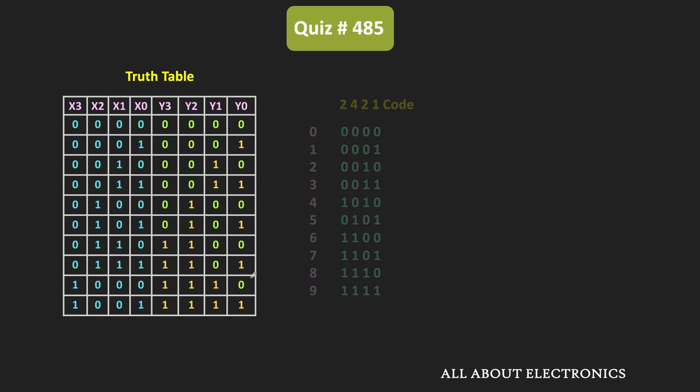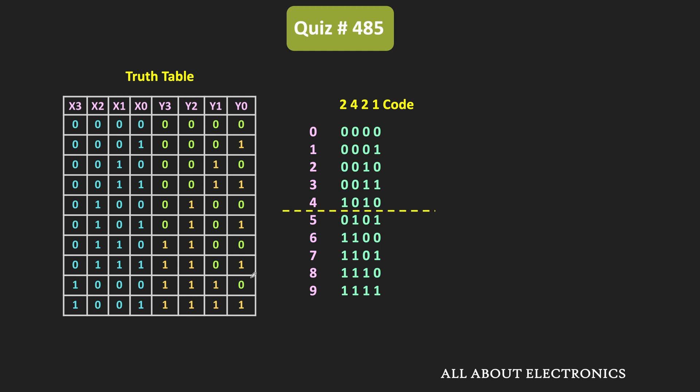The third option is the 2421 code. Similar to the 8421 code, this 2421 BCD code is also a weighted code. The MSB has the weight of 2, while the next digit has the weight of 4. These are the corresponding 2421 BCD codes for decimal digits 0 to 9. This 2421 BCD code is a self-complementing code, meaning we can find the complement of any number by simply changing 1s to 0s and 0s to 1s.